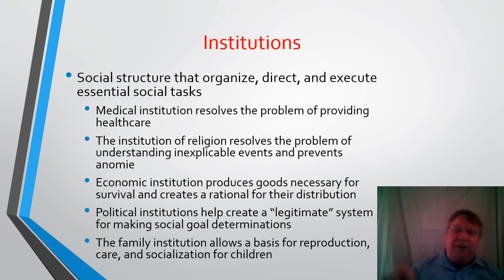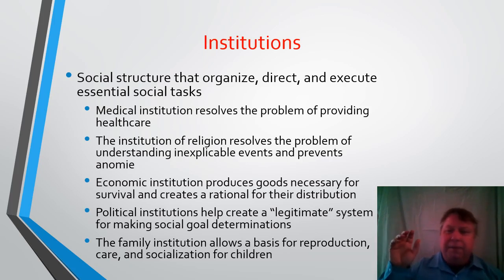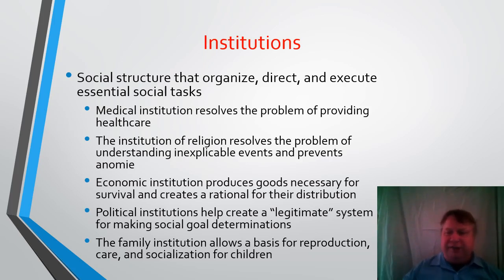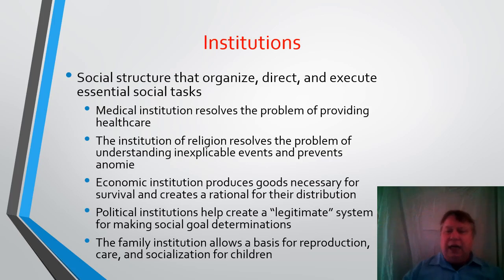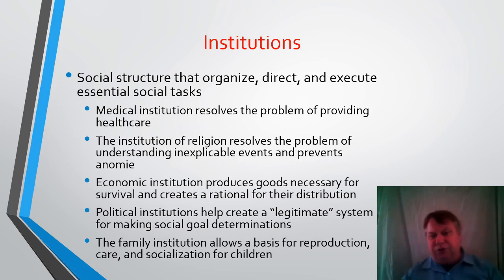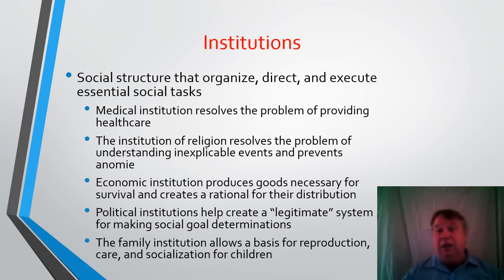Institutions — remember we talked about the functionalist analysis. Society is made up of different institutions that perform different functions. Medical care takes care of providing health care and keeps people healthy. Religion gives people a reason for living or prevents anomie. Economics provides goods and resources. Politics creates legitimacy so that we feel we're in a society where the right people are in charge, whether or not that's true. Family provides reproduction, care, socialization, and love.